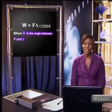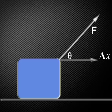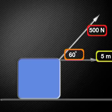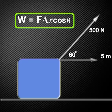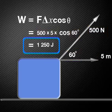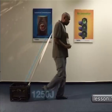Let's use this formula to calculate the work done in our example. The pull force on the crate was 500 Newtons at an angle of 60 degrees over a distance of 5 metres. Substituting these values into the equation we get 500 Newtons times 5 metres times cosine 60 degrees, which gives an answer of 1,250 joules. That means the work done on the crate was 1,250 joules.